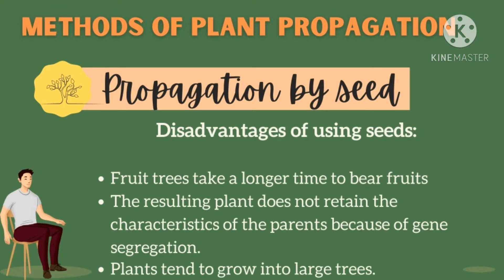There are also disadvantages of using seeds. First, fruit trees take a longer time to bear fruits — we will have to wait for the trees to bear fruit, collect seeds, and propagate again. Second, the resulting plant does not retain the characteristics of the parents because of gene segregation. Since seeds are produced sexually, they can inherit a gene combination of the parents, so other characteristics may occur — similar to human genetics. Also, plants tend to grow into larger trees.